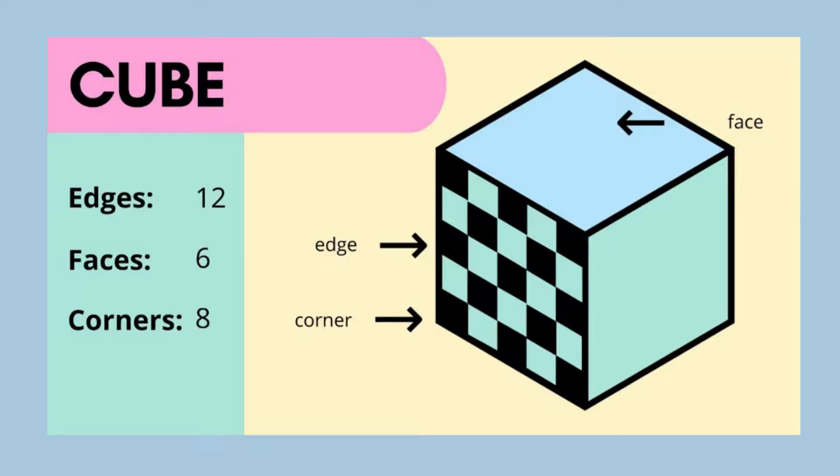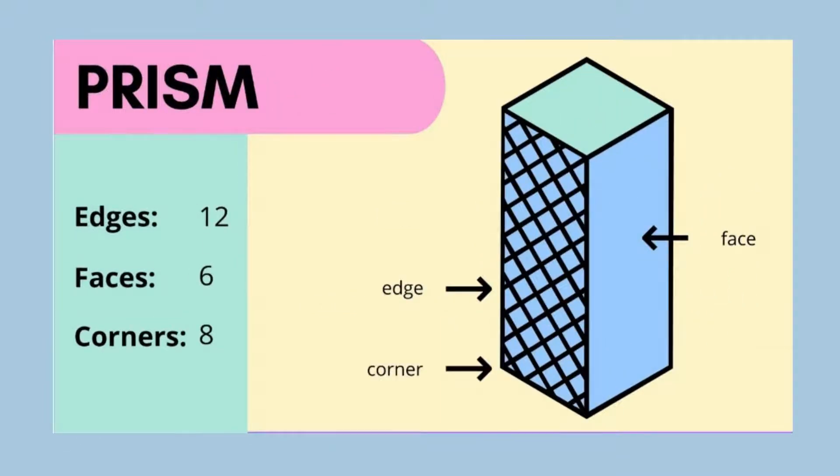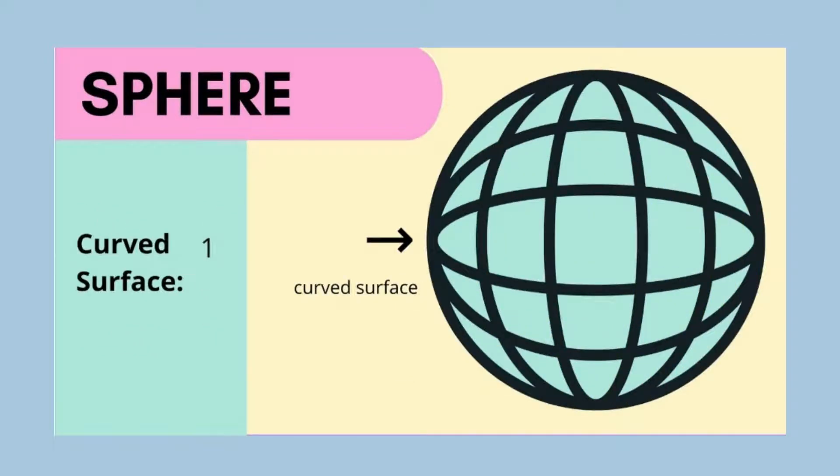Next comes the pyramid. It has eight edges, five faces, and five corners. Next comes the prism. It has 12 edges, six faces, and eight corners. This 3D shape is a sphere.